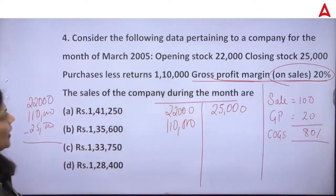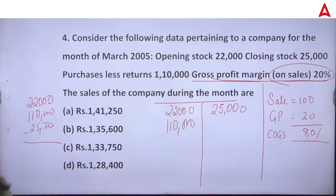Now, what can you do? Directly, you can derive the sales. Since cost of goods sold represents 80% of sales, you can work backwards from that figure.